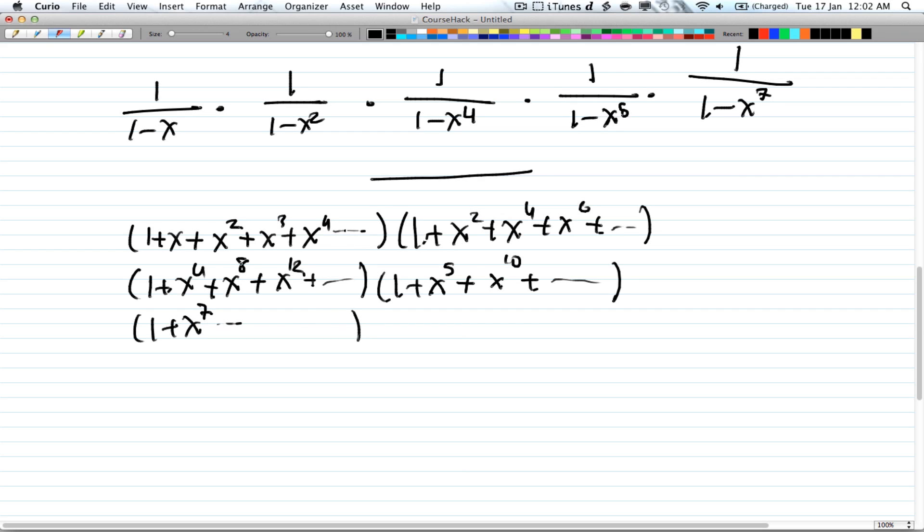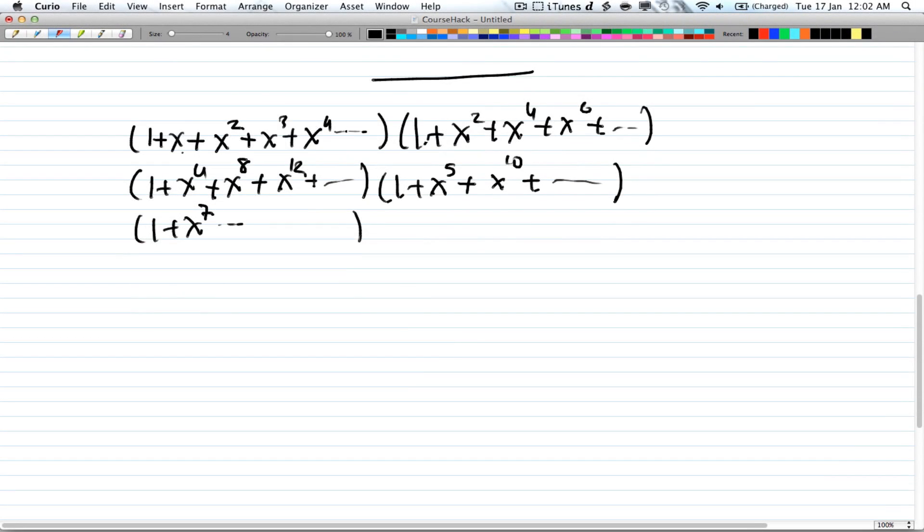So no summand is divisible by 3. And the generating function for this is 1/(1-x) for the number of 1's, and then times 1/(1-x²) times 1/(1-x⁴) times 1/(1-x⁵), and so on and so forth. So as long as you don't get any summand that's divisible by 3, you're good.